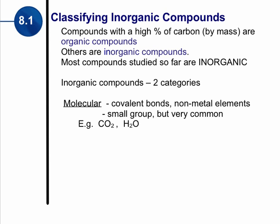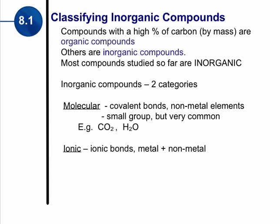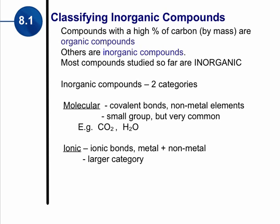The other type is ionic. An ionic inorganic compound is an ionic bond. This deals with a metal and a non-metal. This is a much, much larger category.